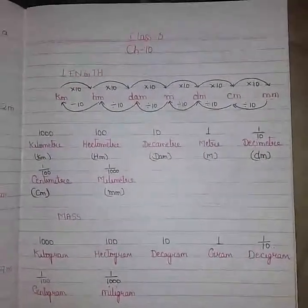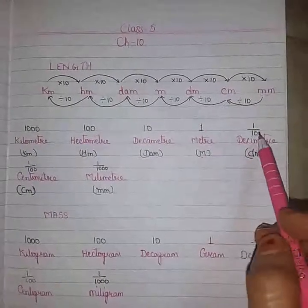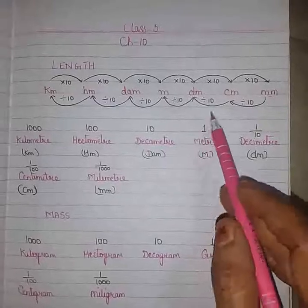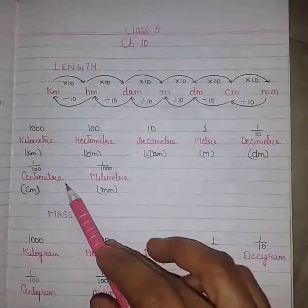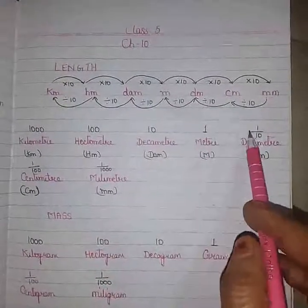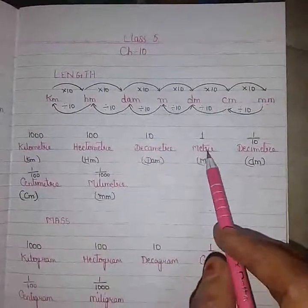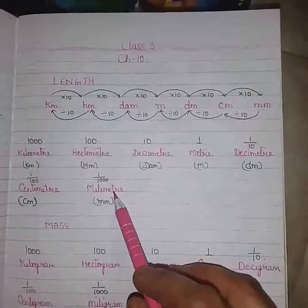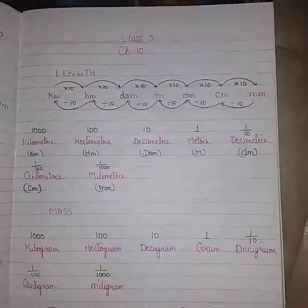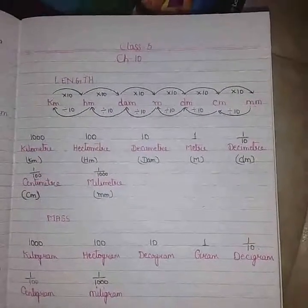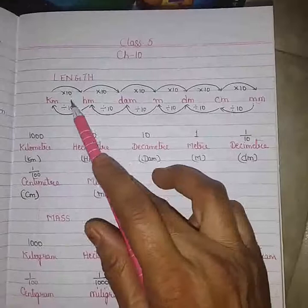In the same way, moving from meter to decameter — left to right — multiply by 100. Meter to centimeter, multiply by 100, that is 1 skip and 2 skips, 10 into 10 is 100. Meter to millimeter, multiply by 1000. So whenever we are converting from a smaller unit to a bigger unit, divide. And if we are going from bigger unit to smaller unit, then we have to multiply.